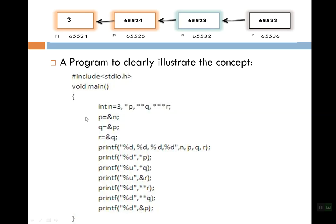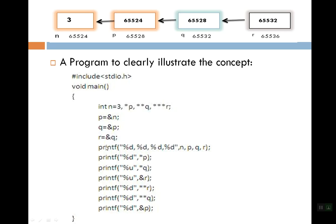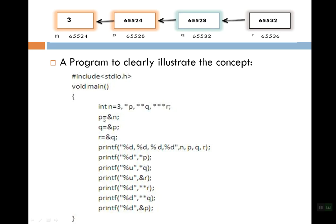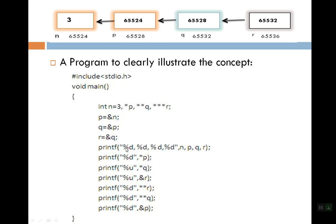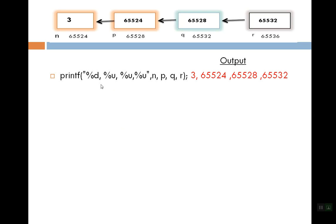Now to understand this concept, let's look at a small program example. The diagram shows the same scenario we discussed. After the printf statements, we will see the output in the next slide. The first statement is printf %d %u with n, p, q, and r.